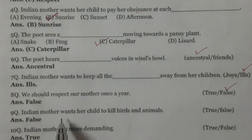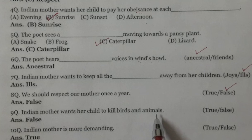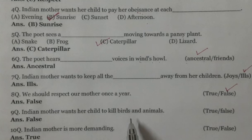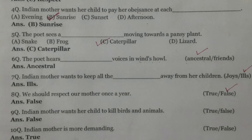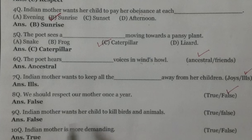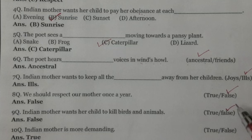Next statement: Indian mother wants her child to kill birds and animals. Indian mother chahti hai ki uska bachcha pashu-pakshiyan nu maare — ye bilkul false hai. Kyunki Indian mother chahti hai ki uske bachche de dil de vich pashu-pakshiyan de liye kind feelings hon, te wo unna nu choga bhi pave. So it is false.